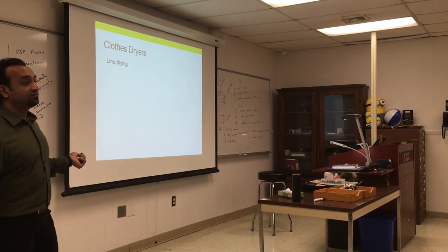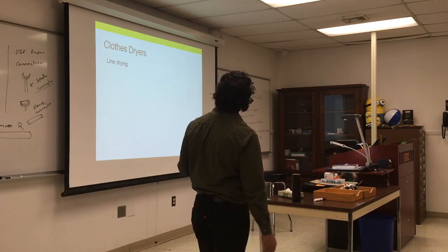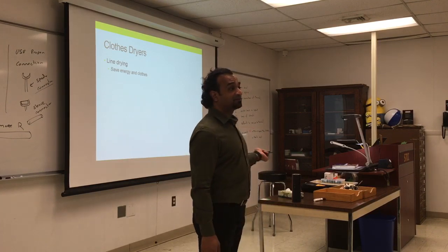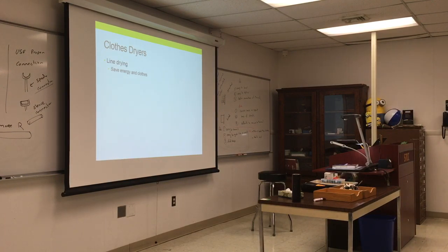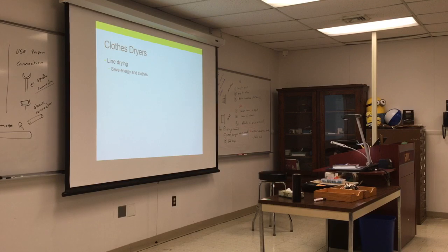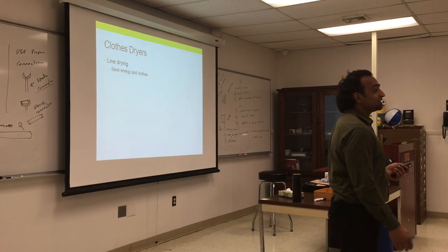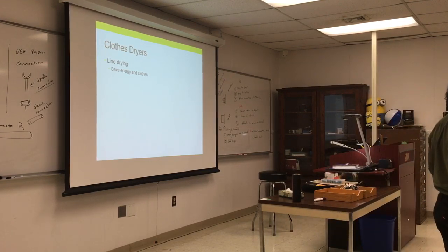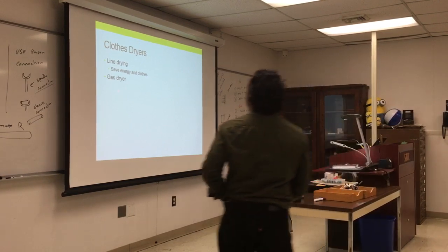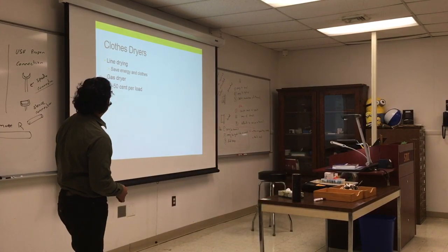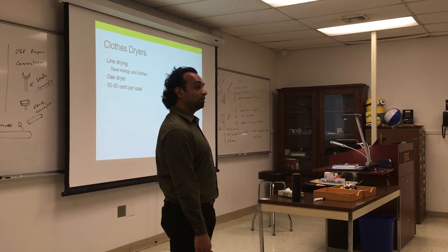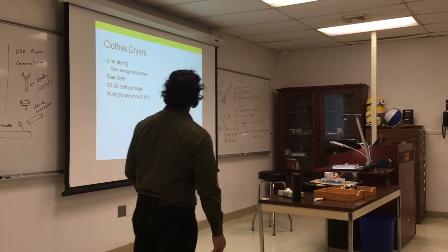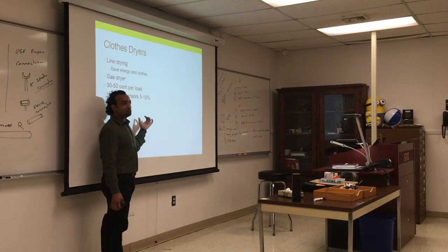Consider line drying for some clothes if you can — it saves energy and saves clothes, since you wear them out every time you wash and dry them. The dryer also shrinks clothes. Most clothes are pre-shrunk, but for quality pieces you should try gentle options. Gas dryers used to be very common — they cost around 30 to 50 cents per load, which is roughly the same as electricity if done efficiently. Most people have switched from gas to electricity.